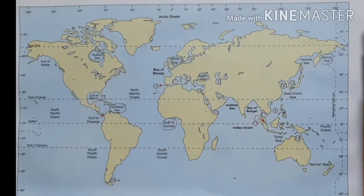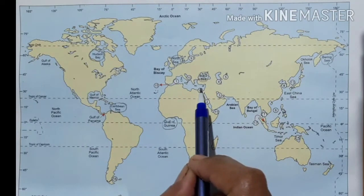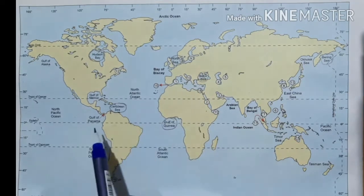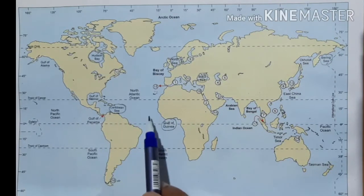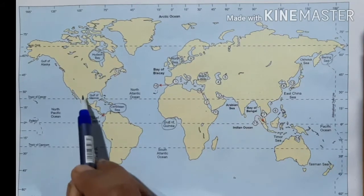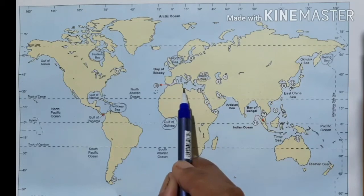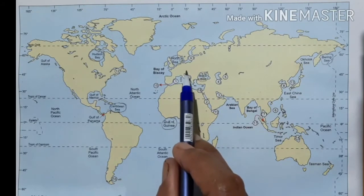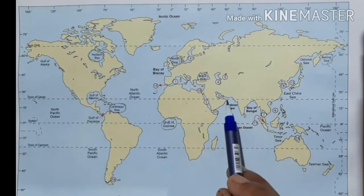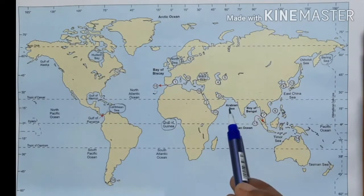Seas are smaller than oceans. They are also known as marginal seas because they are found along the margins of the continent. The Caribbean Sea is a marginal sea of the Atlantic Ocean, located north of the South American continent and south of the North American continent. The Mediterranean Sea is bounded by Europe and Africa. The Arabian Sea is located in the western part of the Indian subcontinent.